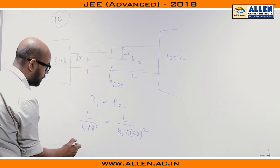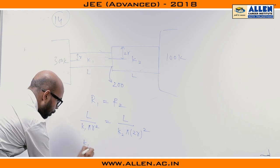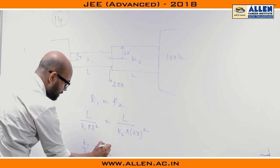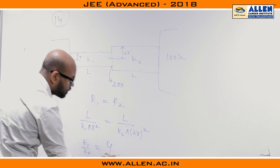Now, if we want to calculate the value of K1 over K2 then L will be cancelled out, pi will be cancelled out, R square will be cancelled out, it would be 4. So, answer of this question is 4.